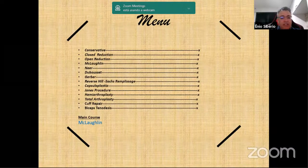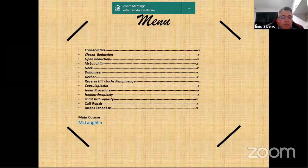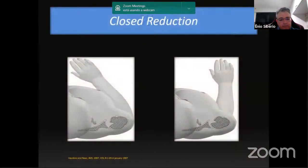In general, in lesions of less than 20% of humeral head involvement, we try closed reduction, and sometimes open reduction. In cases of injuries between 20 and 45% of involvement, we do McLaughlin. Above 50%, we indicate arthroplasty. It is important to remember that we usually try reduction in injuries with up to three weeks of evolution. When we do closed reduction, the arm in slight internal rotation tends to dislocate again, so we immobilize it at 20 degrees of external rotation for one month.